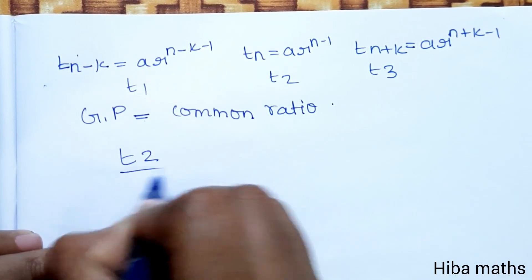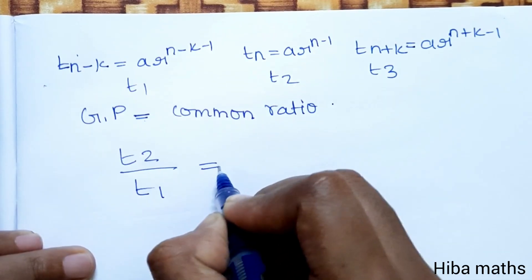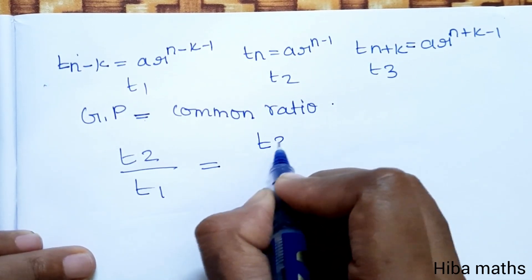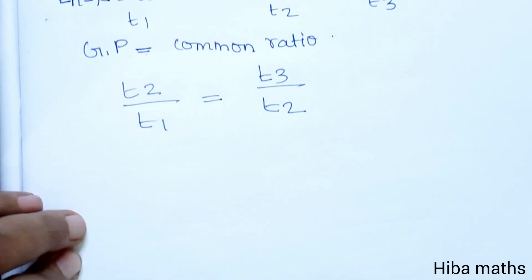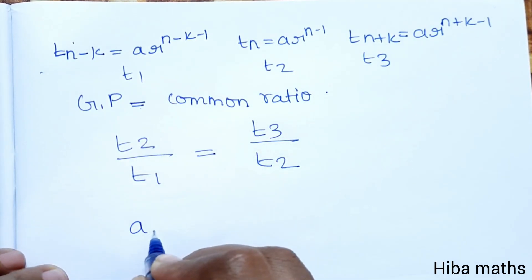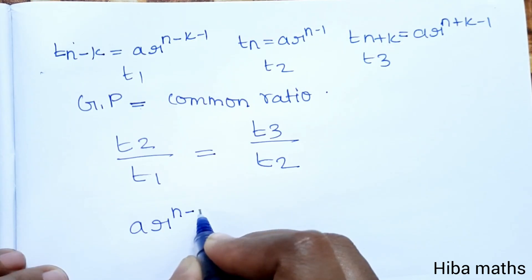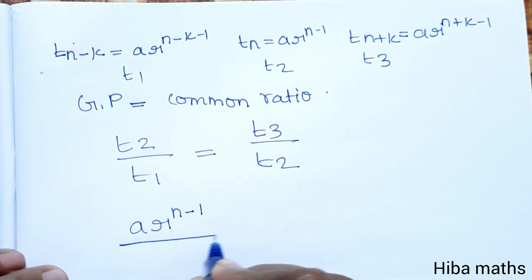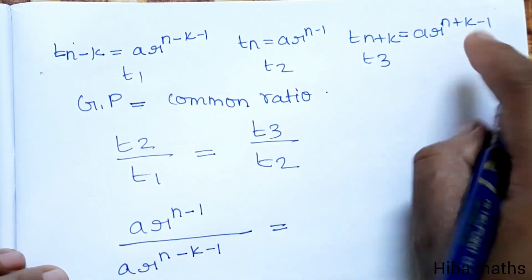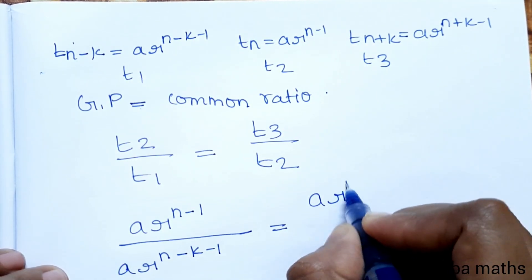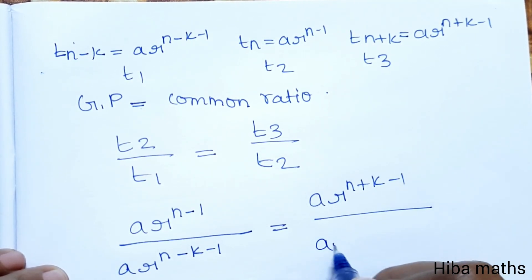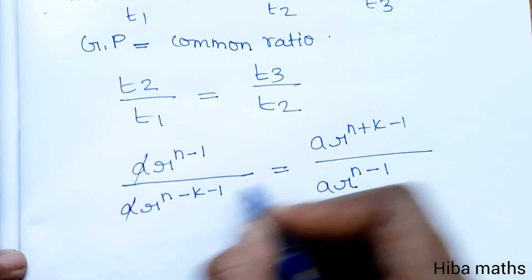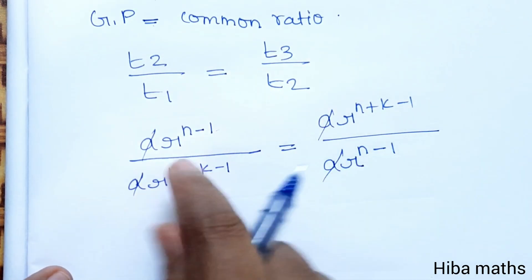Common ratio: T2 divided by T1 is equal to T3 divided by T2. If we substitute, T2 is a·r^{n-1} divided by T1, which is a·r^{n-k-1}. That is equal to T3, a·r^{n+k-1} divided by a·r^{n-1}.